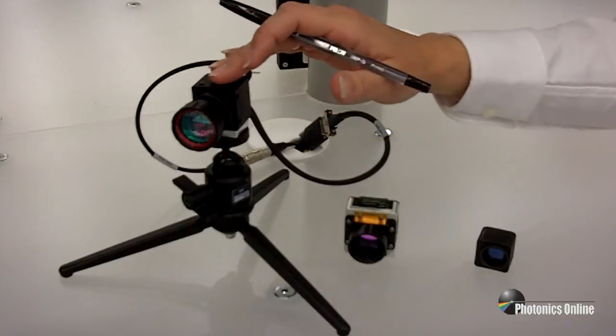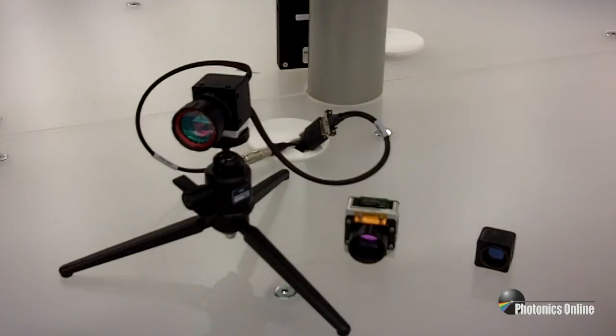So this is our new camera introduction, the 640 CSX. It's part of our MicroSWIR camera line. It hits a sweet spot in both swap and in performance here.